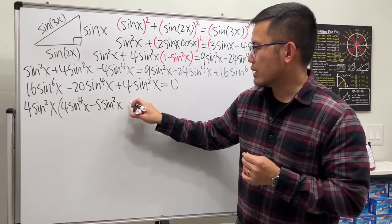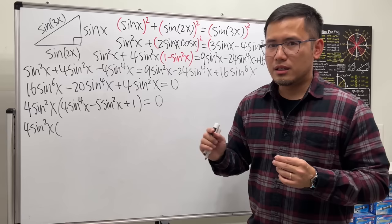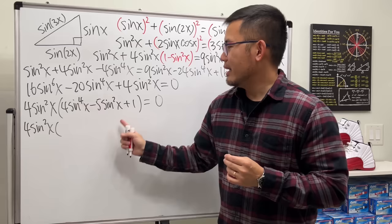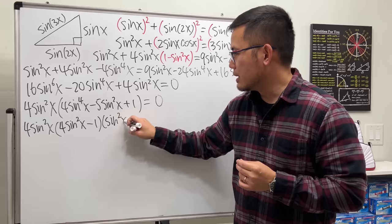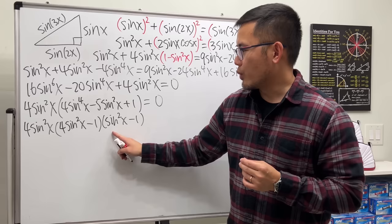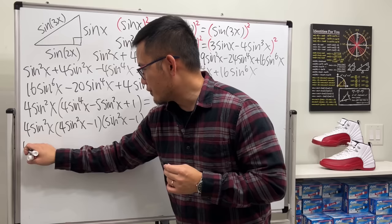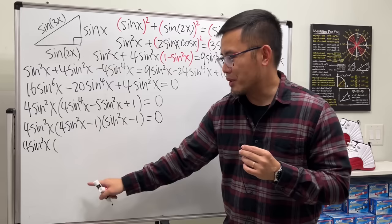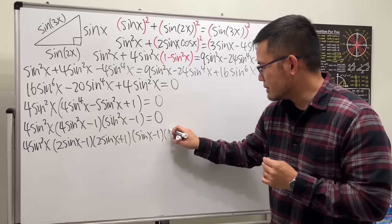Every term has a factor of 4 sine squared, so let's factor that out: 4 sine squared x times (4 sine to the fourth power x minus 5 sine squared x plus 1) equals 0. Can we factor the quadratic in sine squared further? Yes! Looking at it as a quadratic: 4 times 1 with middle term negative 5 — this factors as (4 sine squared x minus 1) times (sine squared x minus 1). Using difference of two squares: this becomes 4 sine squared x times (2 sine x minus 1)(2 sine x + 1)(sine x minus 1)(sine x + 1) equals 0.